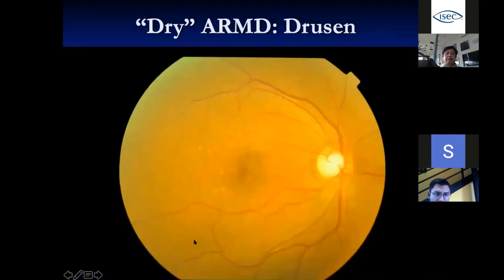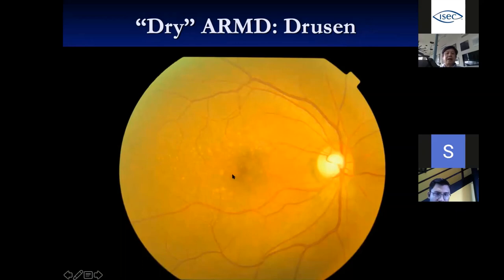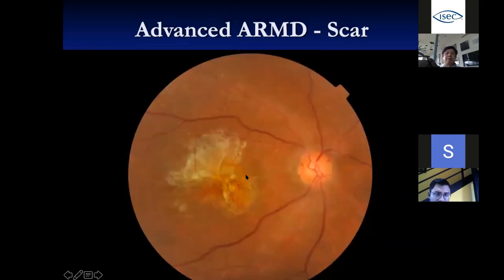In dry AMD on OCT, you don't see distortion in the retinal layers themselves, but you can see little humps of elevation at the RPE level — representing waste product (drusen) accumulation at the RPE level. If the patient has a scar, which is advanced AMD, there is really dense scarring that is not good for vision.